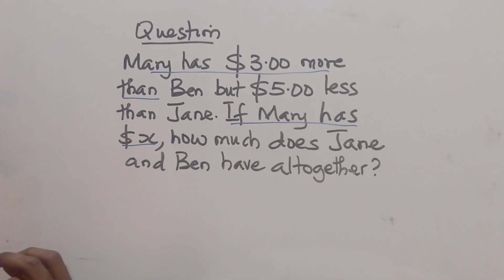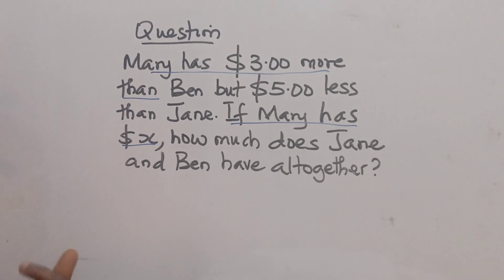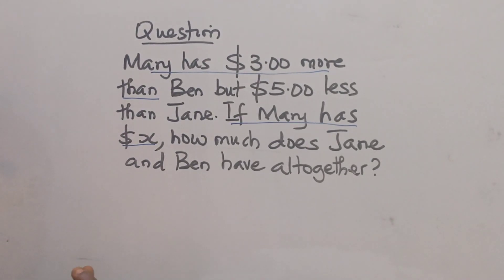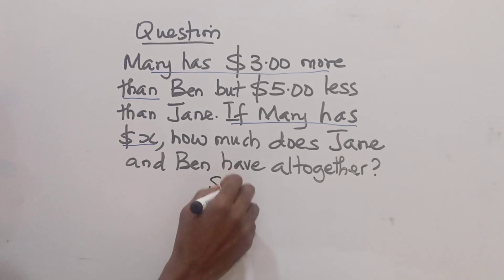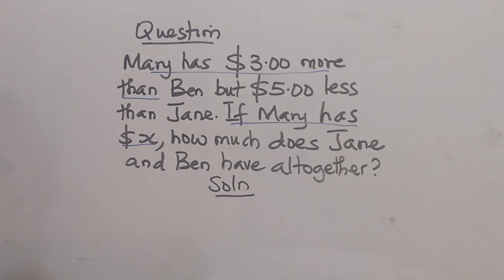The equation says: Mary has three dollars more than Ben, but five dollars less than Jim. If Mary has x dollars, we want to find what Jim and Ben have. One thing about word problems is we want to incorporate them into mathematical expressions, so let's try to understand the statements.